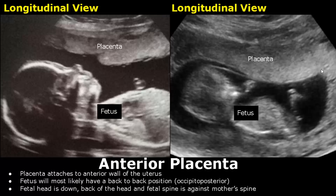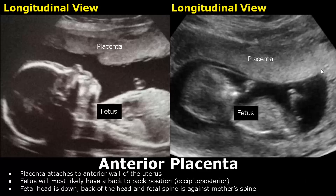The fetal position will usually be a back-to-back or an occipito-posterior position. That means the fetal head will be down towards the cervix and the back of the head and the fetal spine will be against the mother's spine.